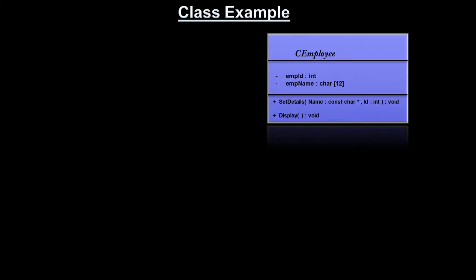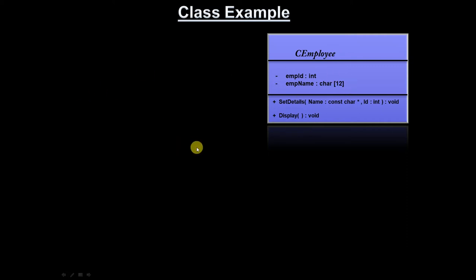Let's look at a class example using a UML class diagram. The class name is CEmployee — 'C' just indicates it is a class. In UML notation, minus (-) indicates private members and plus (+) indicates public members. The class has: emp_id of type integer, emp_name as a character array of 12, set_details function taking const char* name and int id returning void, and a display function taking no arguments returning void.